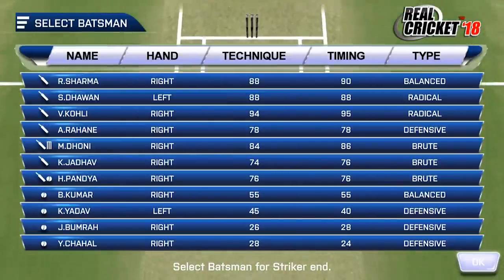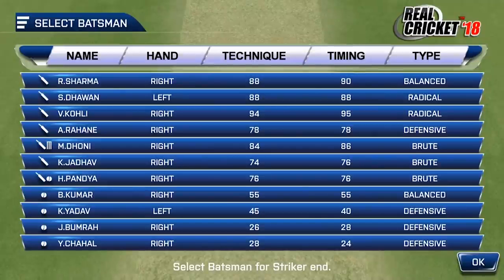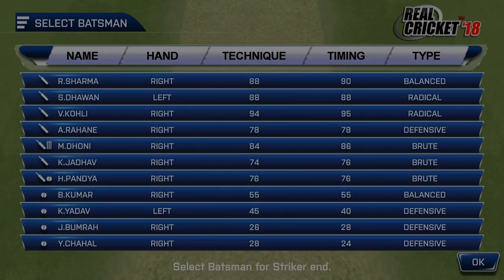For example, the defensive batsman would be strong in defense but relatively weak in lofted shots, while the brute batsman should be your preferred choice for lofted shots. These ratings decide how effective a batsman is with respect to timing, placement, and picking up the gap. Obviously if you lose too many wickets at the top, by the time you reach the tail enders it would be really difficult to score because of their low ratings.